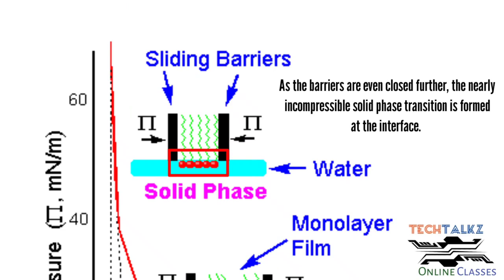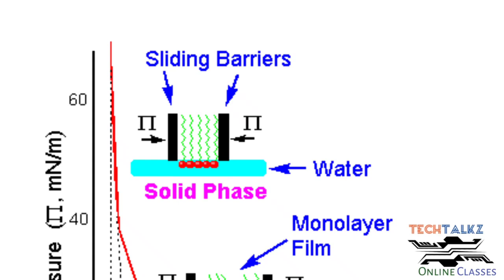As compression continues, there is a transition from the liquid phase to the solid phase. In this phase, the amphiphilic molecules are closely and orderly arranged in a tightly packed configuration. This is the ideal condition for LB filmmaking. If the barriers are compressed further, the LB film will collapse and the orderly arrangement will be disrupted.